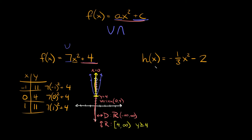Now let's try this last one: h of x is equal to negative 1 third x squared minus 2. Our 'a' number is negative one third, so since it's negative our parabola is going to open down. And this minus 2 tells us the parabola will hit the y-axis at negative 2, where y equals negative 2.